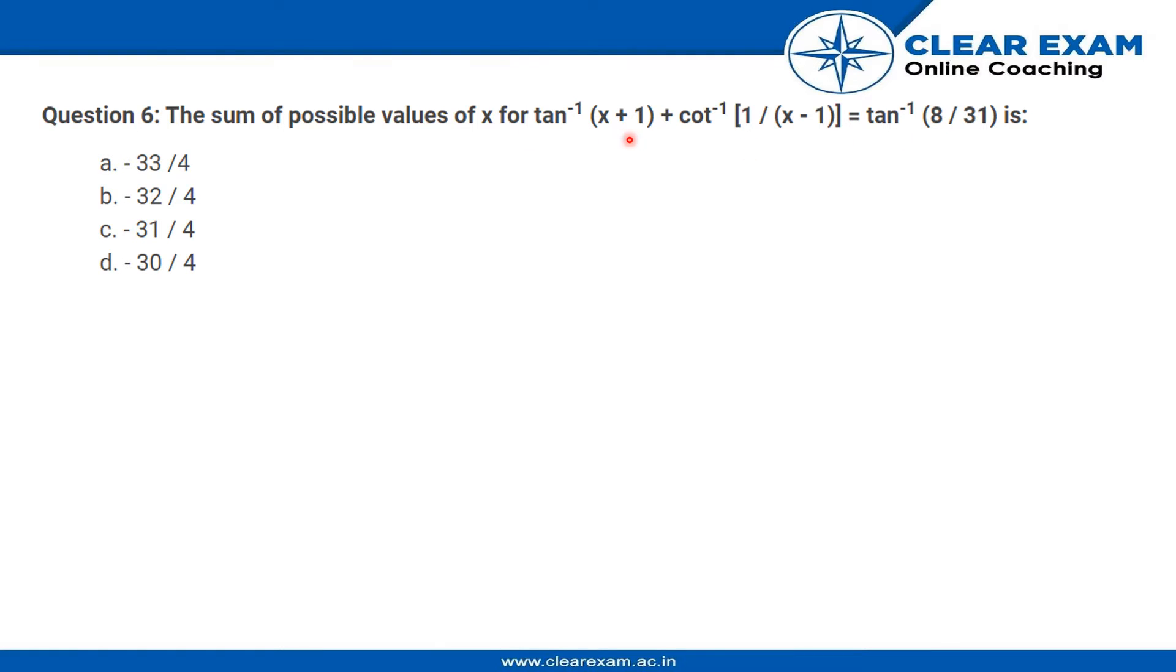That is tan inverse (x + 1) plus, when we reverse this cot inverse, we have tan inverse of (x - 1) is equal to tan inverse of 8 upon 31. Now this equation becomes quite simpler as we have tan inverse a plus tan inverse b is equal to tan inverse some constant c.